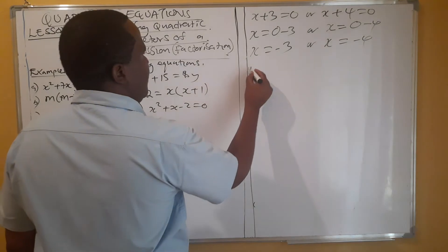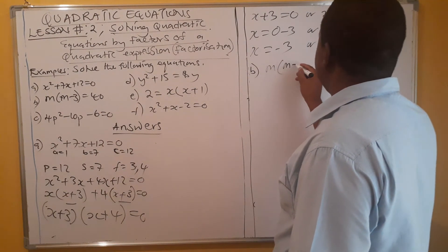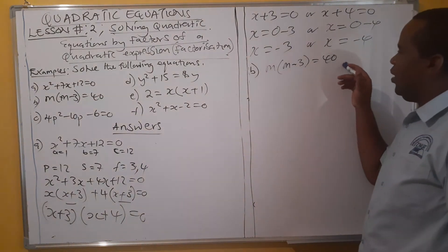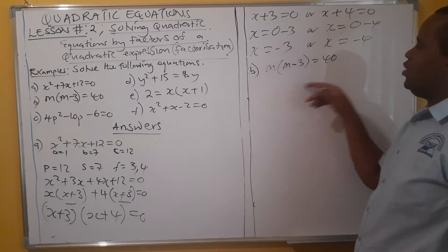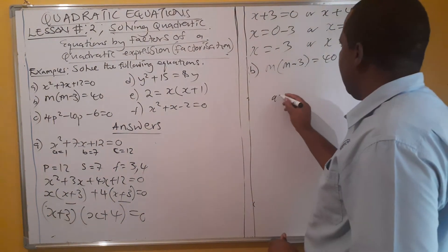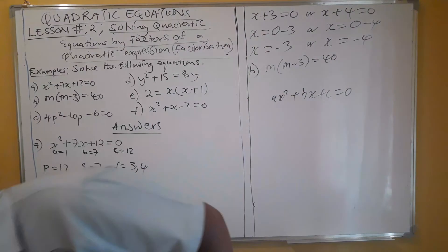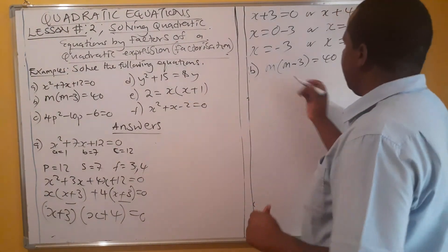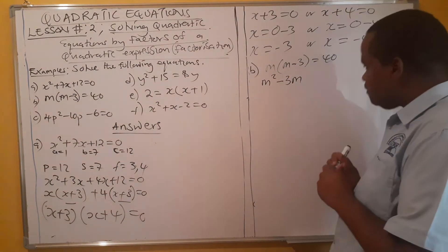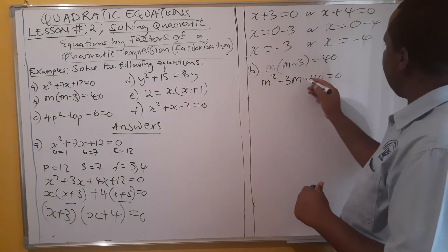Now for part (b): m(m − 3) = 40. You cannot apply the zero product property here because this is not equal to zero. The first thing you must do is rewrite this equation in standard form: ax² + bx + c = 0. So we distribute m: m × m = m², and m × (−3) = −3m. Since 40 moves to the left side, it becomes −40, giving m² − 3m − 40 = 0.